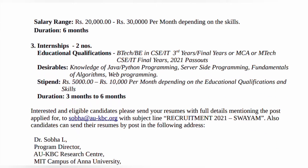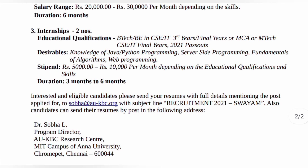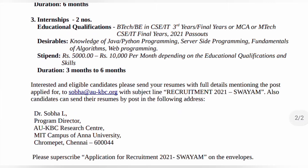Salary for Junior Software Engineer: 20,000 to 30,000 per month. For Internship, 2 positions are available. Educational qualification: BTech or BE in CSE or IT (third year complete or final year), or MCA or MTech in CSE or IT (final year). Also open to 2021 passed-out candidates. No prior experience required. Duration: 3 to 6 months, with possibility of a permanent job. Stipend: 5,000 to 10,000 per month, depending on educational qualification. Skills required: Java, Python programming, and server-side programming proficiency.